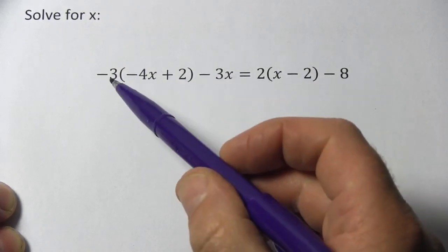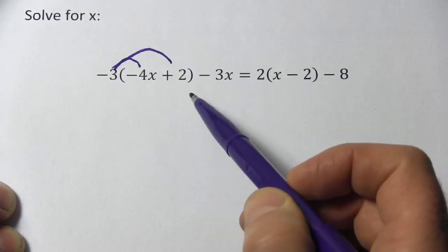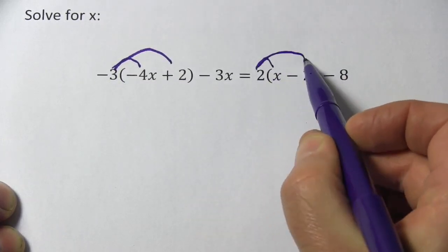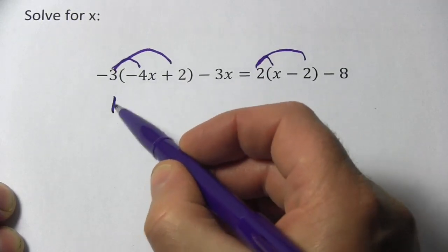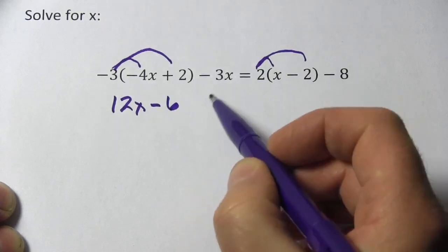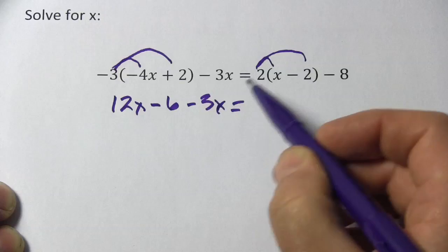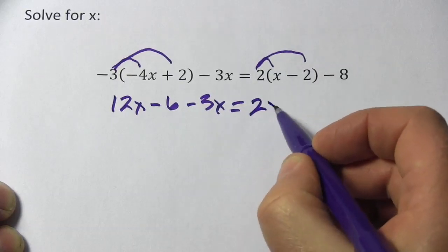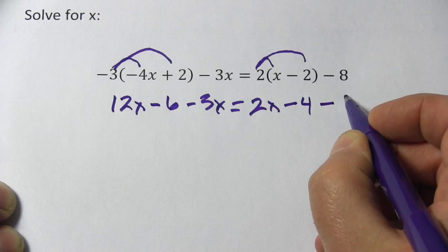And here, we've got two sets of those. So I've got a negative 3 out here that needs to be distributed through the parentheses, and a 2 over here. I'm going to go ahead and do that. Negative 3 times a negative 4x is a positive 12x. And negative 3 times 2 is minus 6. And then we've got our minus 3x. And then over here, 2 times x is 2x. 2 times a negative 2 is negative 4 and a negative 8.